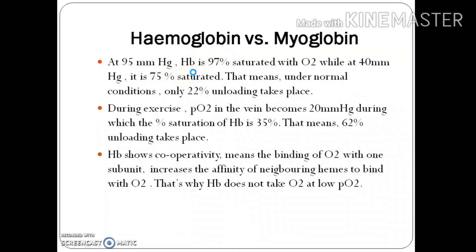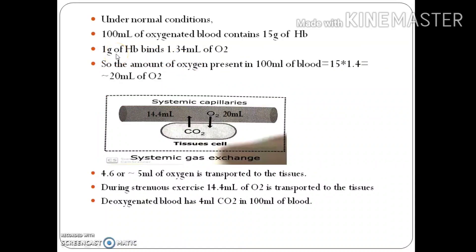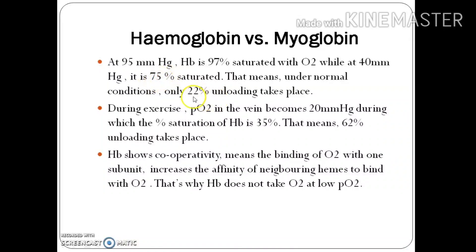This is consistent with what we saw in the last lesson: the amount of oxygen present in 100 ml of blood is 20 ml, and when 100 ml of blood crosses the tissue, nearly 5 ml is transported to the tissues — consistent with 22% unloading. During exercise, pO2 in the vein becomes 20 mmHg, at which the percent saturation of hemoglobin is 35%, meaning 62% unloading takes place.